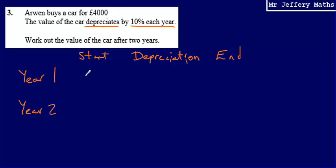At the beginning of Year 1, Arwen's car was worth £4,000. That's how much Arwen paid for it. We're told that it depreciates by 10% each year. So 10% of our £4,000 is going to be £400.